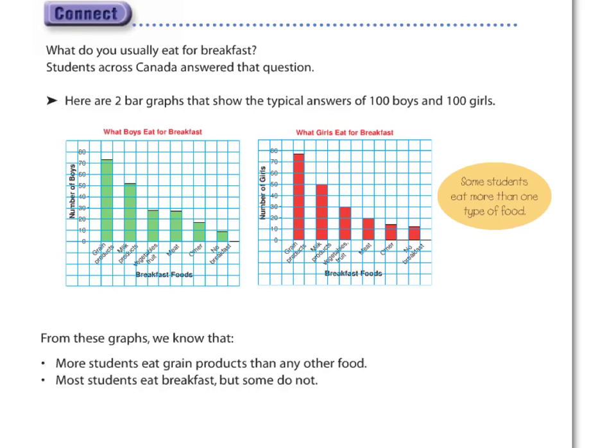And we can see it's a very clearly done graph. What boys eat for breakfast is our title, and of course, girls. Breakfast foods, the foods are listed clearly. The number of students, be it boys or girls. And we can see they've numbered by tens and they've numbered on the lines. Very important to number on the lines when creating your graphs.